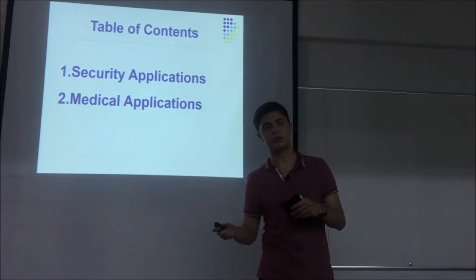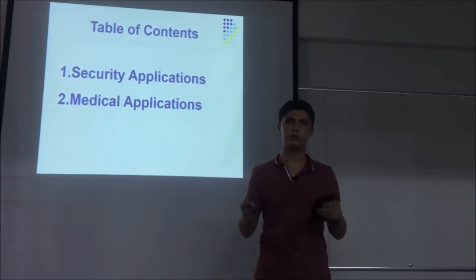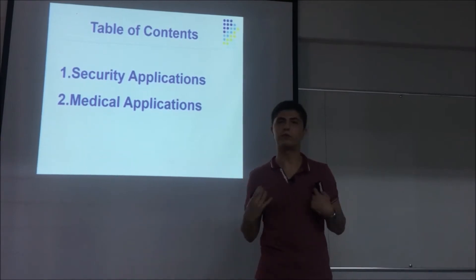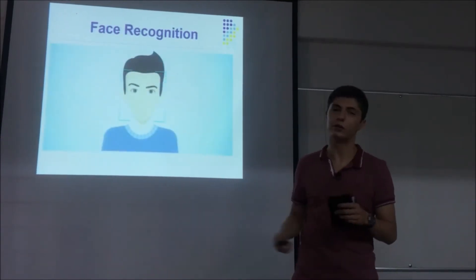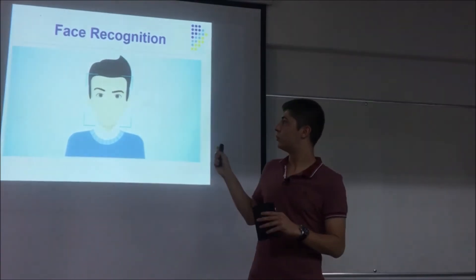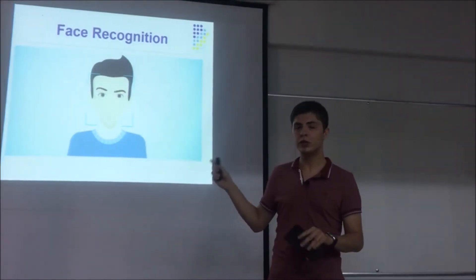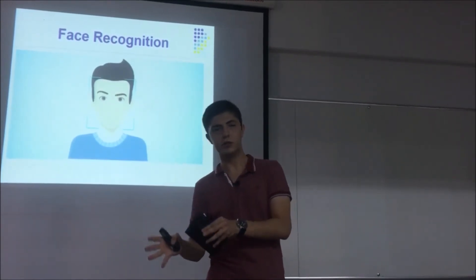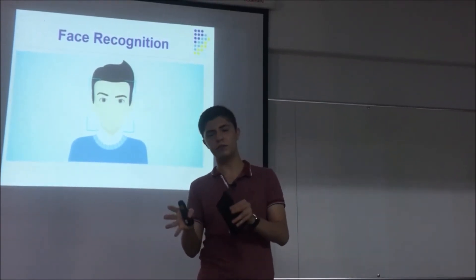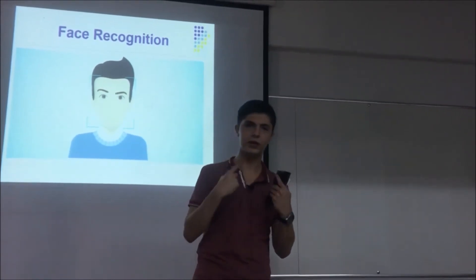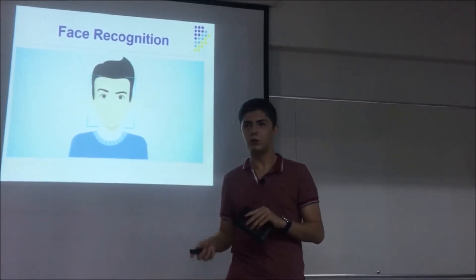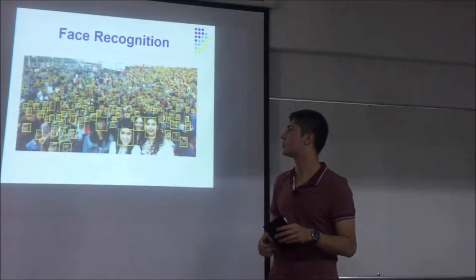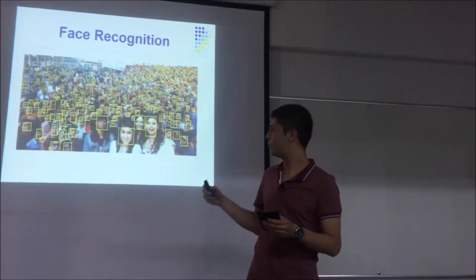Image processing is used in many ways for security applications, but I am going to mention a few of them. Let me start with face recognition. This technology is used most commonly in our smartphones today. The computer or smartphone can understand the difference between a human face and a tree. Now I want you to look at this picture — there are a lot of people.